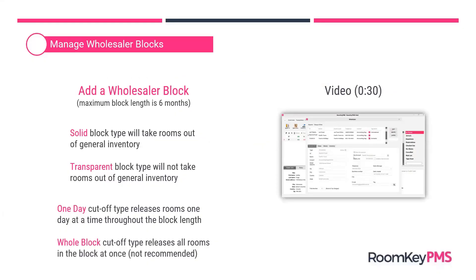We just saw one block there, but you can continue to add new blocks depending on how long you've negotiated your contract with the wholesaler. The block length is six months, but if you have a contract negotiated for one year, you would create two six-month blocks using that same method.